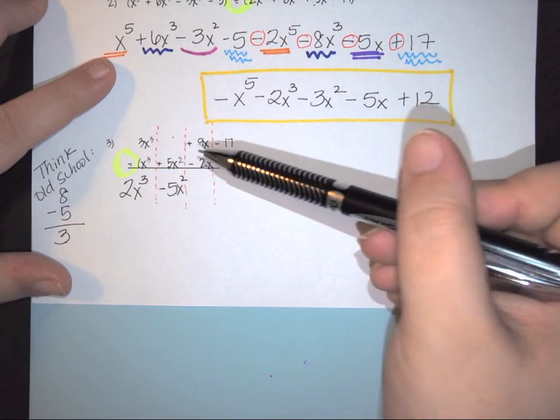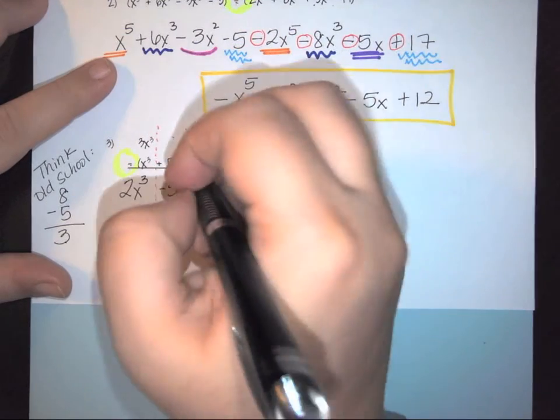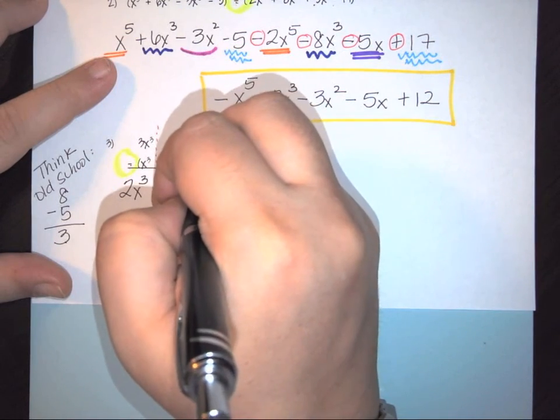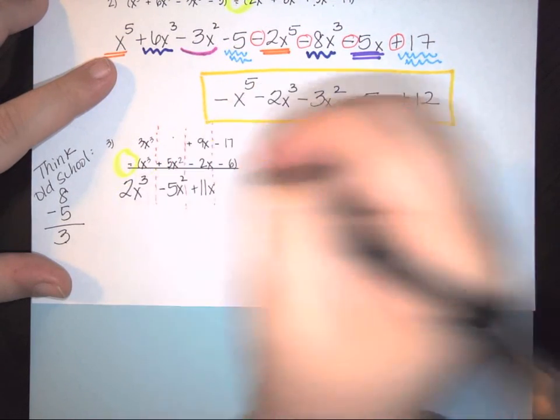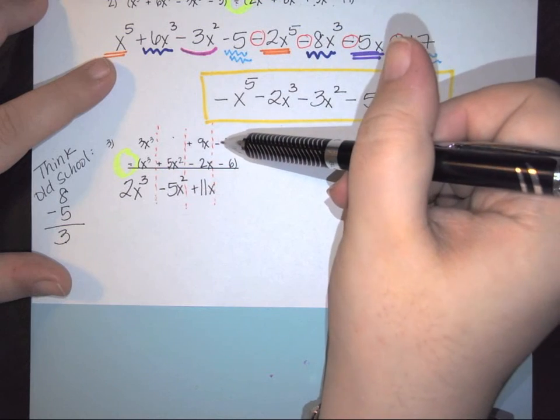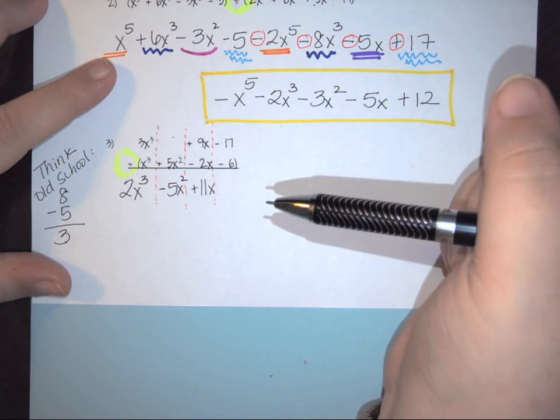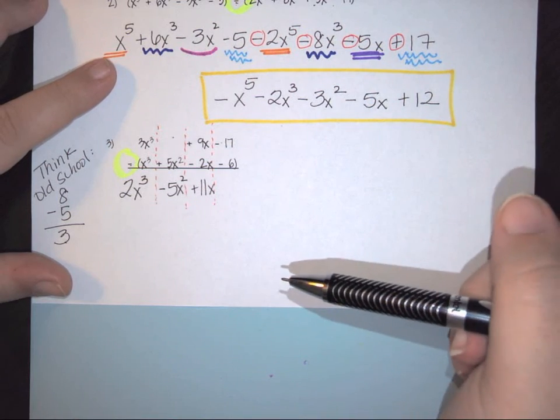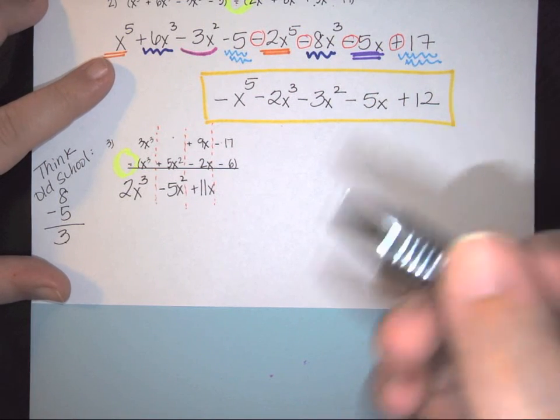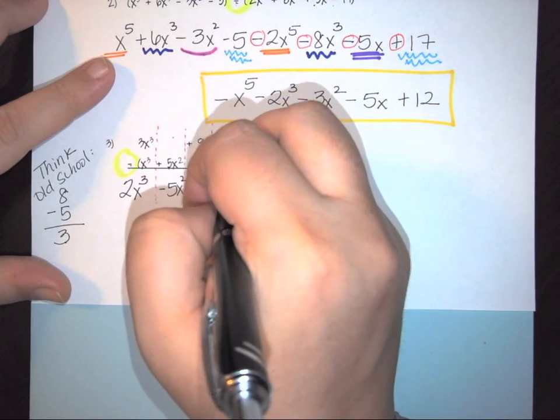I have 9 minus negative 2. So that's the same as plus. So here this becomes 11x. And then I have negative 17 minus a negative 6. Well, that's the same idea as negative 17 plus 6. So this gives you a negative 11.